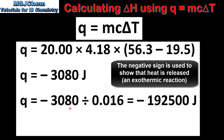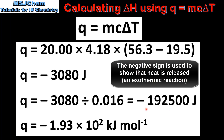Next we divide this value by the amount in moles of methanol used in the reaction, which gives us negative 192,500 joules. Next we divide this value by 1000 to convert to kilojoules per mole. So our final answer is negative 1.93 times 10 to the 2 kilojoules per mole.